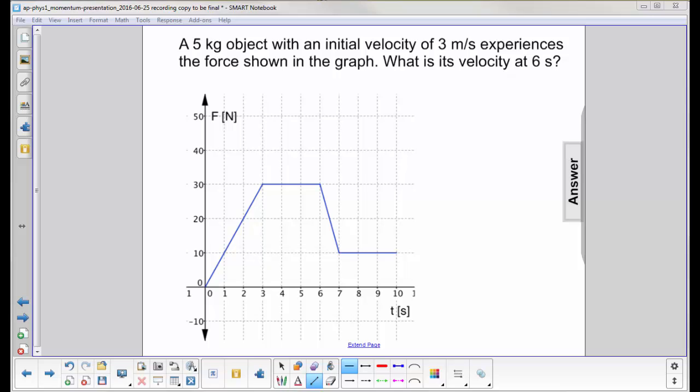A 5 kilogram object with an initial velocity of 3 meters per second experiences the force shown in the graph below. What is its velocity at 6 seconds?